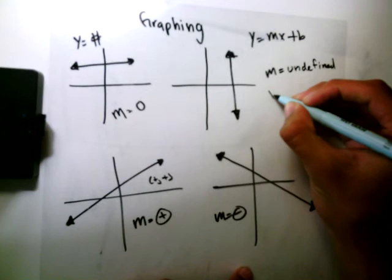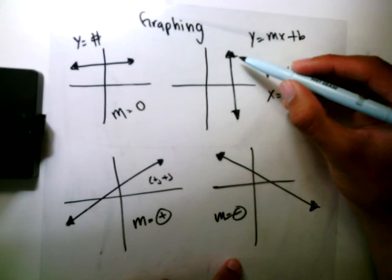Whenever you're dealing with an undefined slope, we're going to be given an equation where x equals some number. Because, as you can see, this crosses the x-axis at some given point.